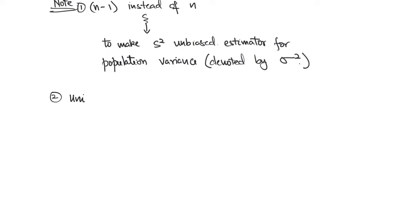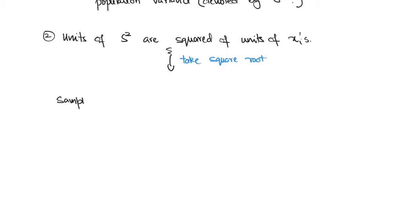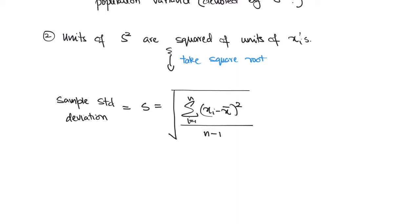A second consideration to note is that the units for the sample variance s squared are the squared units of the data points xi. To take care of this situation we take the square root to end up with the sample standard deviation, which is denoted by s and has the same units as the data values xi.